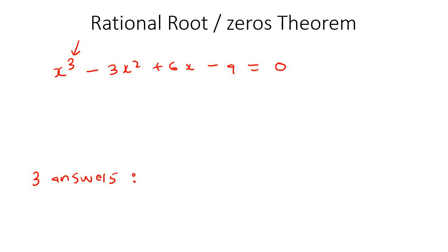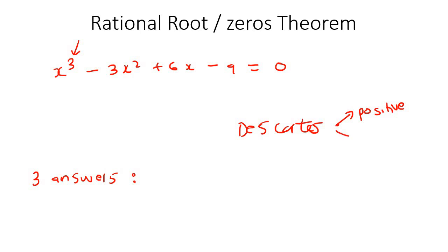We don't know if those answers are going to be real or if they are going to be imaginary, but we know that there will be three. We could use Descartes' rule of signs, which would help us to see how many positive roots there might be, how many negative roots there might be, and how many imaginary roots there might be. That is what we looked at in the previous lesson.